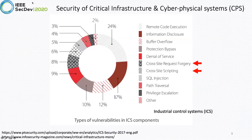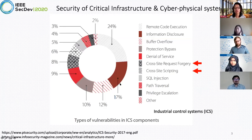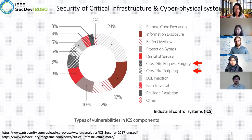Looking at 2017 data from an international group studying industrial control system vulnerabilities, many reported issues — such as cross-site request forgery and cross-site scripting — are just ordinary vulnerabilities found on workstations and web servers. This type of software vulnerability is permeating through all parts of our lives.